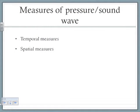So the measures — we talked about sound, we talked about pressure, we talked about how this disturbance is going to result in a wave. And now how do we measure this pressure wave or sound wave? We need to measure them because we want to understand the sound. There are two kinds of measures of pressure and sound wave: temporal measures and spatial measures. Temporal measures are related to time; spatial measures are related to space.